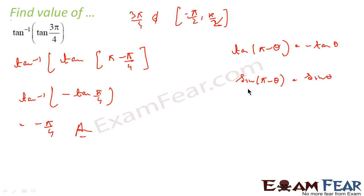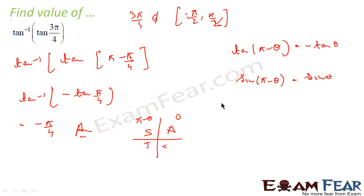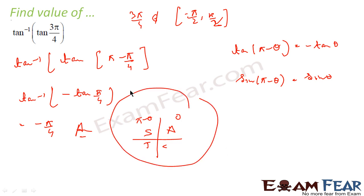Remember this — we know the rule 'add sugar to all sin tan cos.' In the range of π - θ, sin is positive so sin(π - θ) = sin θ, but tan is negative in that range so tan(π - θ) = -tan θ. This formula is from the trigonometry chapter.